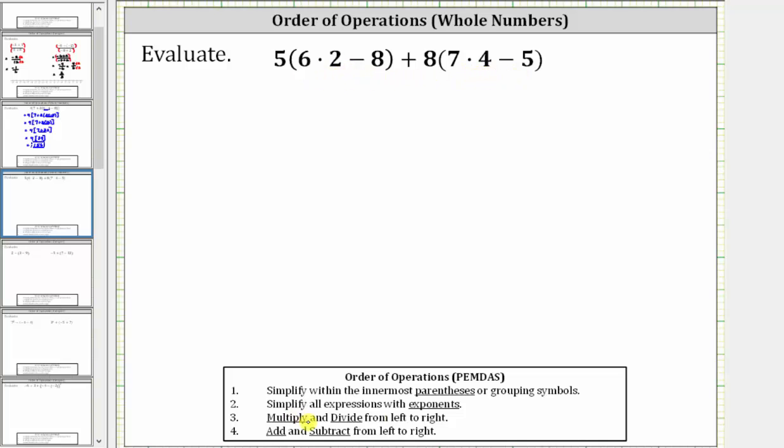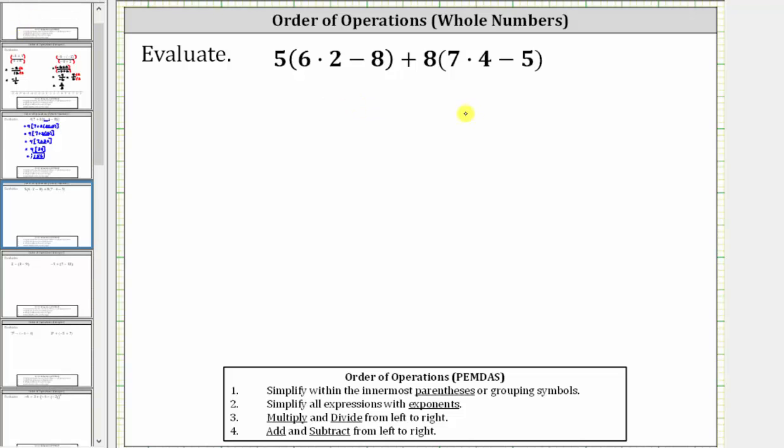And since we multiply and divide before we add and subtract, the first step is to determine the products in the parentheses. So we begin by determining six times two, which is 12, as well as seven times four, which is 28.